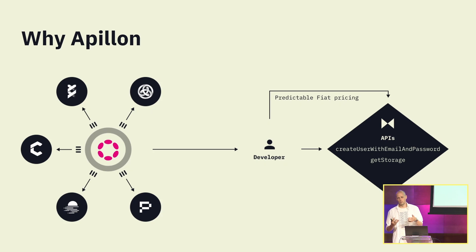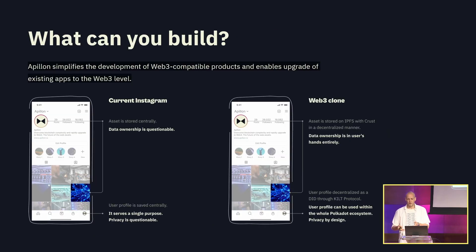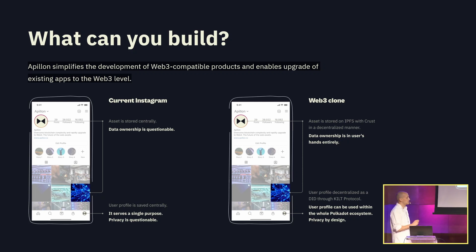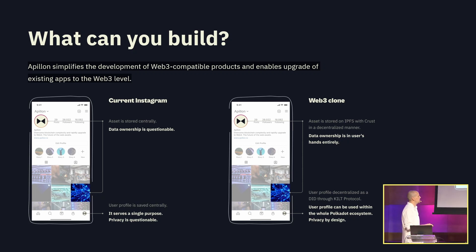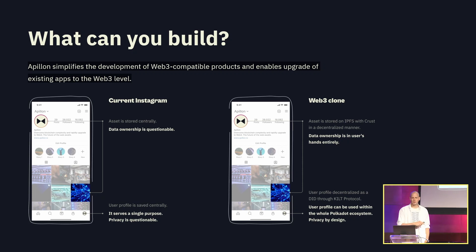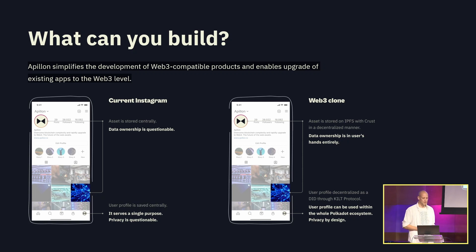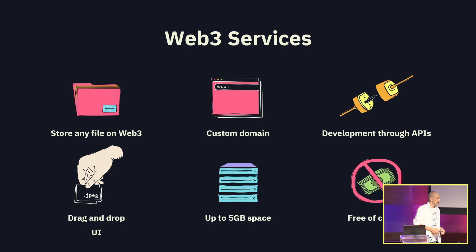Polkadot serves as a layer zero providing interoperability at the back-end level, while we interconnect those parachains at the front-end level to build real use cases. For example, here's a simple Instagram clone: with current Instagram, data ownership is questionable and everything lives with Meta. A Web3 clone could utilize three different parachains — digital identity, Crust for storage, and NFT ownership — giving the same user experience but with complete ownership on the customer side.